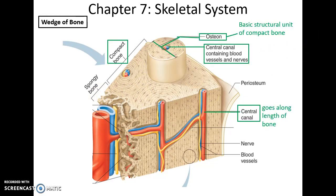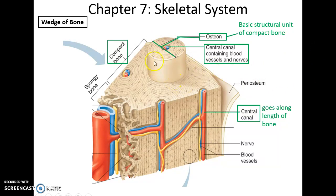Compact bone tissue has a recurring structure called the osteon. The osteon looks like the rings of a tree or a dartboard, and at the very center is an open space called the central canal where blood vessels and nerves are found. Central canals run up and down the length of the bone.